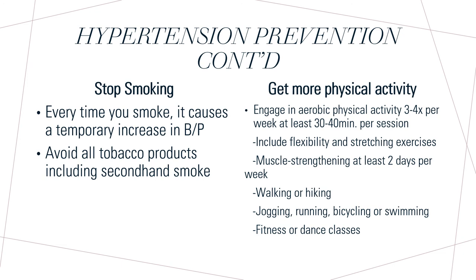Smoking cessation and being more physically active can aid in preventing hypertension. Smoking causes a temporary increase in blood pressure, so quitting can lead to a decrease in blood pressure and reduce the risk for heart attack and stroke. Avoiding all tobacco products, including secondhand smoke, is recommended. Engaging in aerobic physical activity three to four times a week, at least 30 to 40 minutes per session, can help maintain a healthy weight and lower blood pressure. Activities with positive effects include walking, hiking, fitness or dance classes, bicycling, swimming, flexibility and stretching exercises, and muscle strengthening.